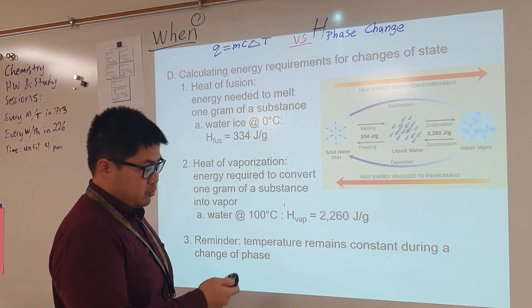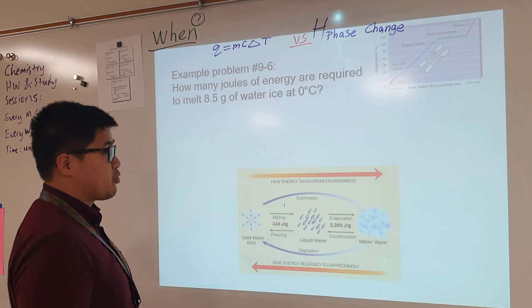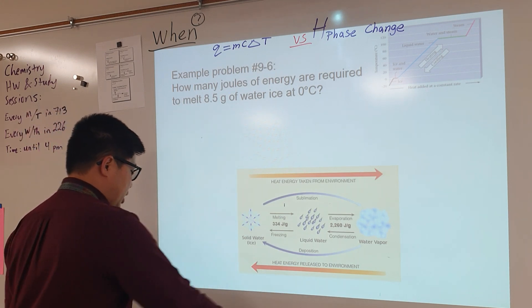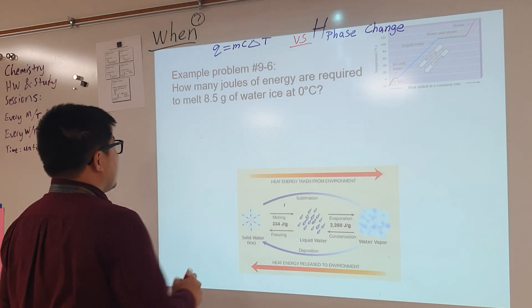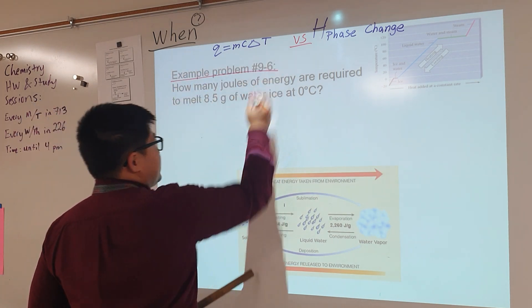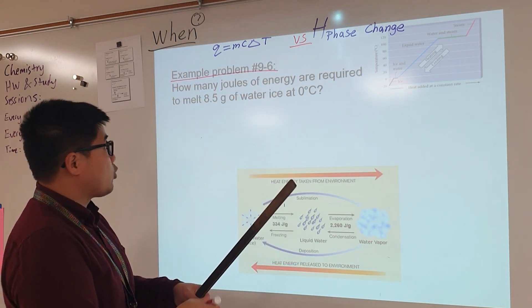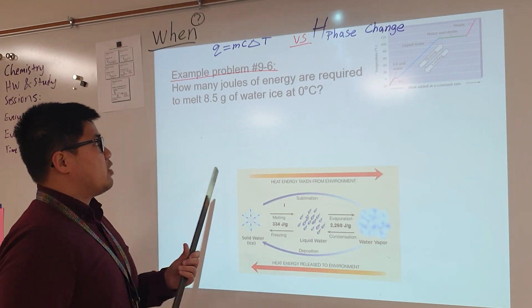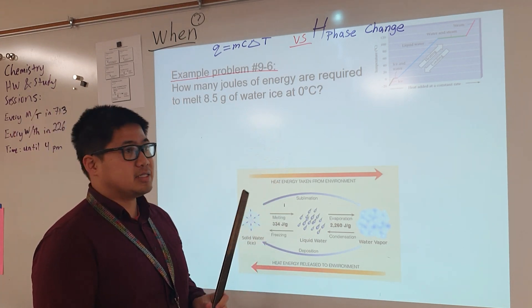Here's an example, really simple, really easy, pretty much a one-step process. Example problem 9-6. The question asks us: How many joules of energy are required to melt 8.5 grams of solid water ice at zero degrees Celsius?